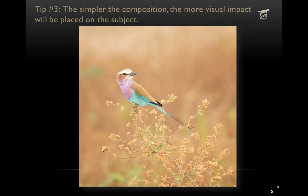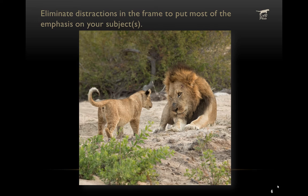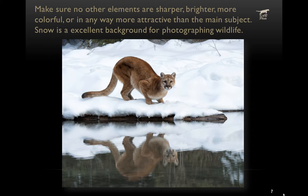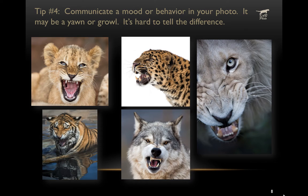The third tip is that the simpler the composition, the more visual impact will be placed on the subject. You want to eliminate distractions in the frame — do a perimeter check and look around your entire composition. You don't want anything to be sharper, brighter, or in any way more attractive or colorful than the main subject. Snow is a beautiful background for photographing wildlife because it really puts all of the attention on the wild animal.